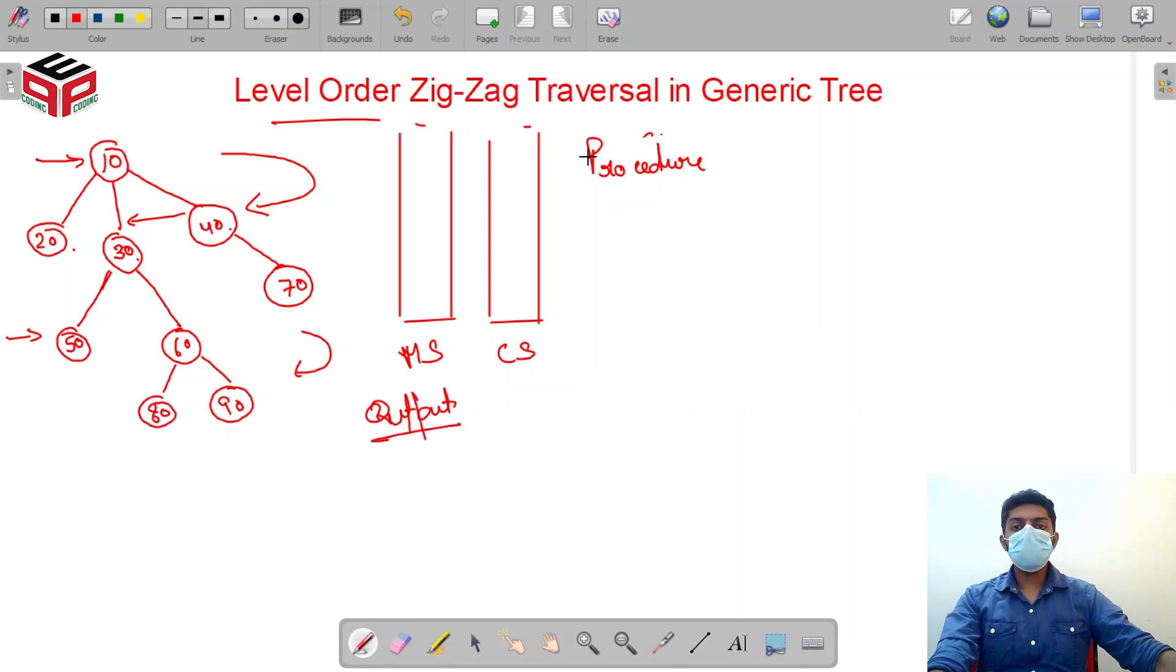The procedure is: firstly I'll be inserting my root node into the main stack, as we did in the last question also. So 10 gets inserted. Now we start the loop, and till when the loop runs is until my main stack becomes empty. So the first procedure is remove from main stack. So 10 gets removed.